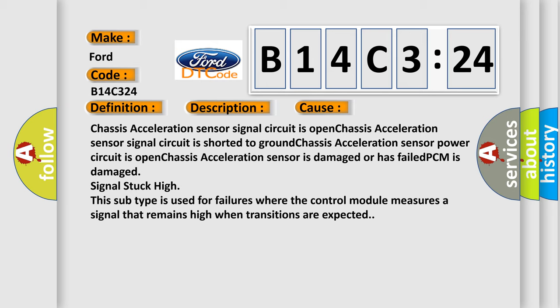This subtype is used for failures where the control module measures a signal that remains high when transitions are expected.